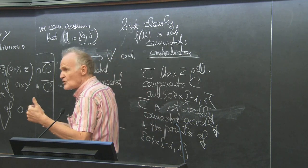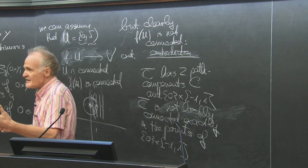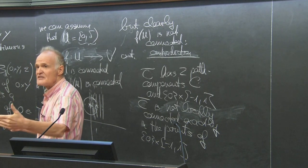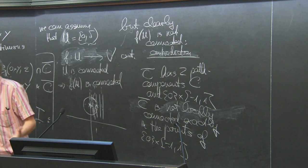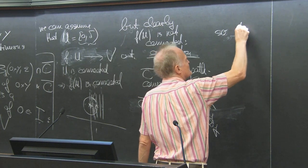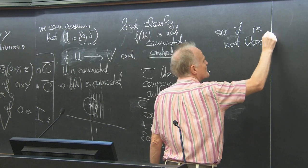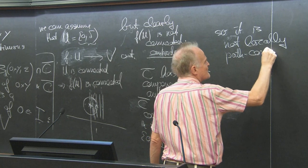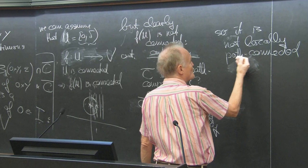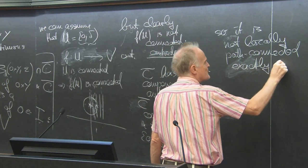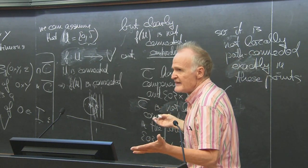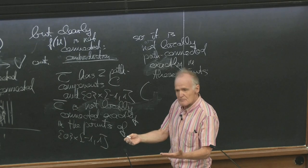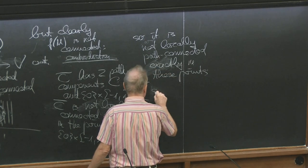It is not locally path connected in these points also. Not locally connected implies not locally path connected. Locally path connected implies locally connected, and path connected implies connected. So it is not locally path connected exactly in the points of 0 × [−1,1].